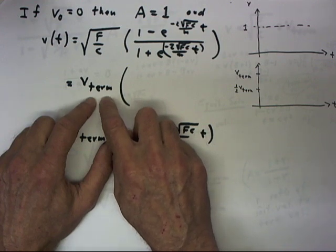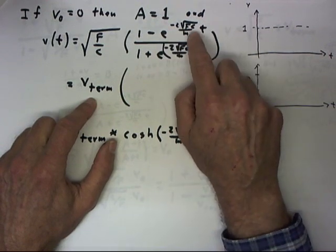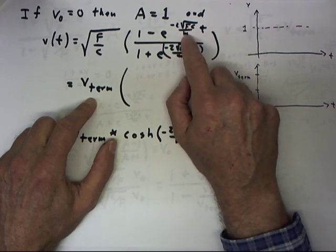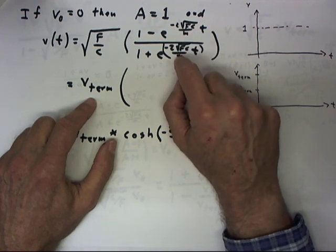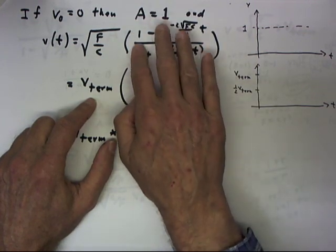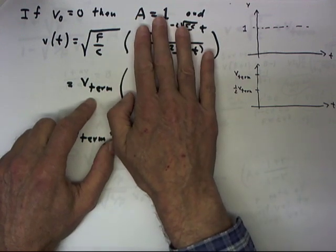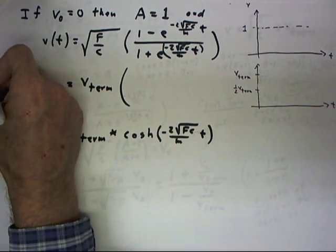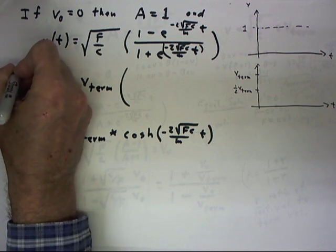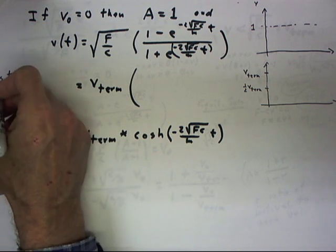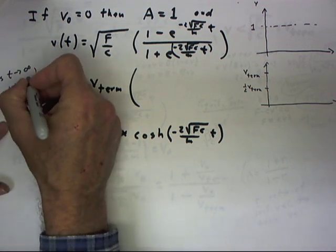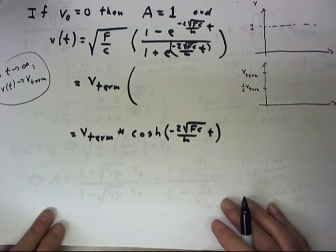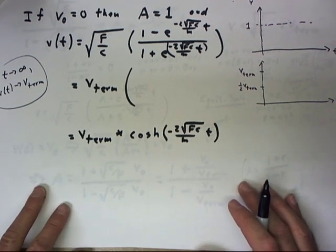Does v actually approach the terminal velocity? Yes. As t approaches infinity, the exponent has a negative coefficient of t, so both exponentials approach 0. We then approach 1 over 1, meaning the whole term approaches 1, and our velocity approaches the terminal velocity. So as t approaches infinity, v(t) approaches the terminal velocity — exactly what we expect.